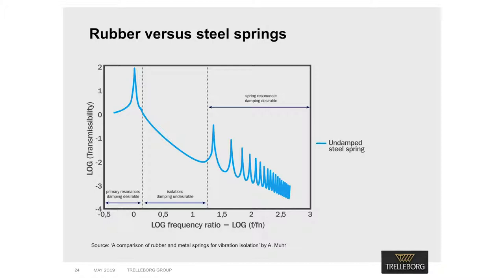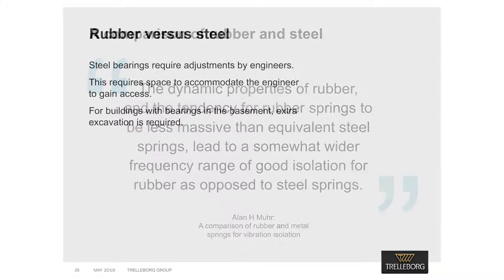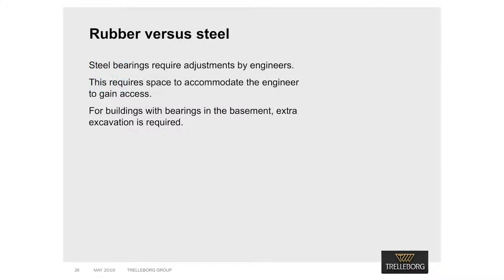Steel bearings require supplemental damping devices to reduce the impact of spring resonance at higher audible frequencies. Rubber, however, has much higher intrinsic damping, so does not require any additional devices. In a paper titled A Comparison of Rubber and Metal Springs for Vibration Isolation, Dr Alan Muir concludes that the dynamic properties of rubber, and the tendency for rubber springs to be less massive than equivalent steel springs, lead to a somewhat wider frequency range of good isolation for rubber as opposed to steel springs. Once installed, steel bearings require adjustments by engineers so that they can perform as required under the load, which can be a time-consuming and sometimes costly process.